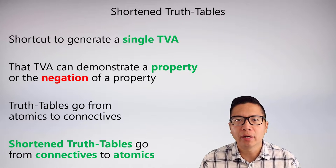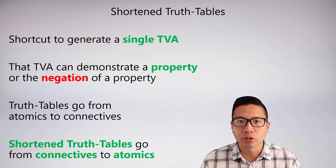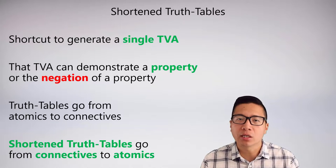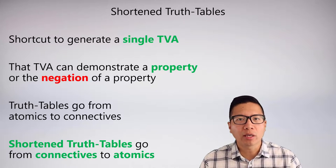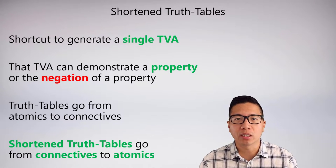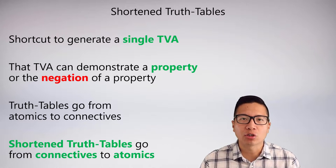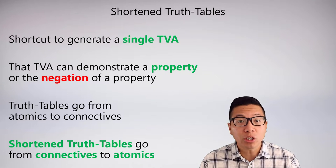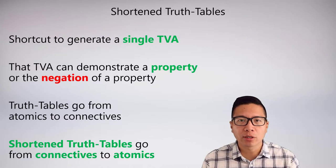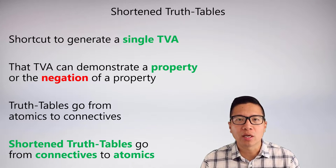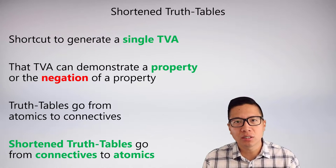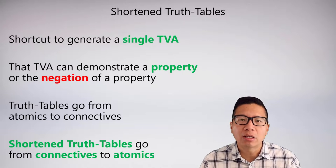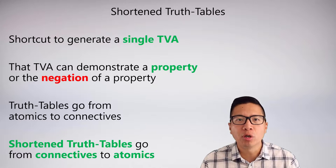It's actually even a bit more powerful than that. With a shortened truth table, we can show the negation of the red properties. I can show that a statement is not a tautology very quickly by generating a single TVA where the sentence is false. And I can show a statement is not a contradiction by generating a single TVA where the sentence is true. Because some of our properties are the opposite of each other, we can demonstrate lots more than expected. The opposite of inconsistency is consistency, and the opposite of validity is invalidity. These are the types of properties we're really going to aim to show with shortened truth tables.